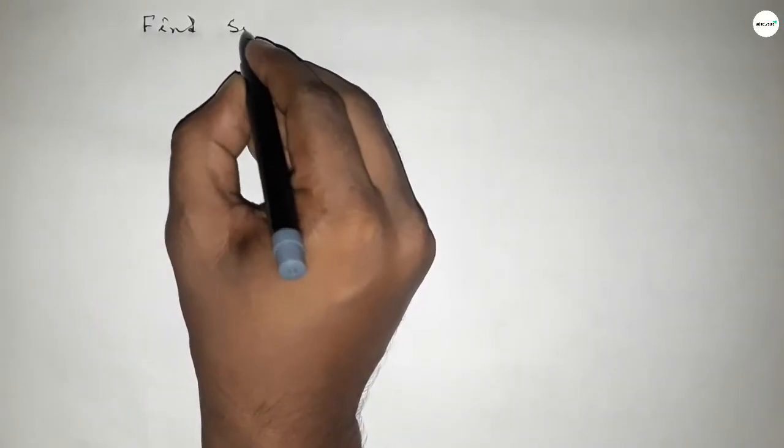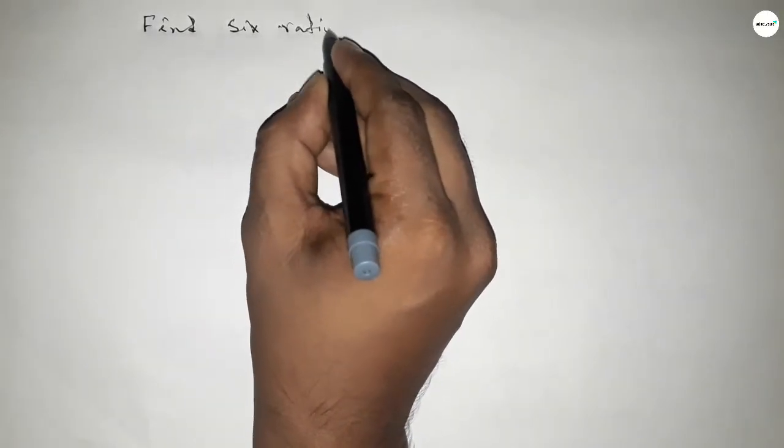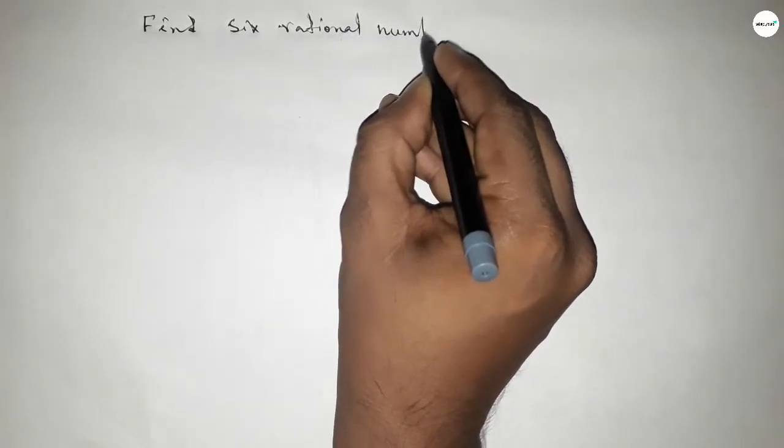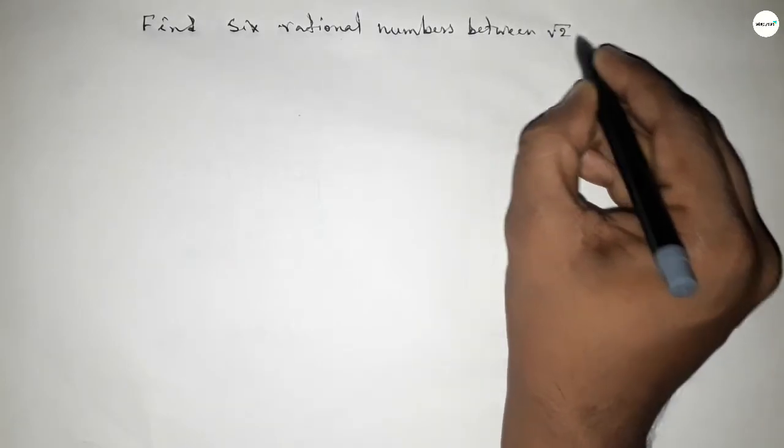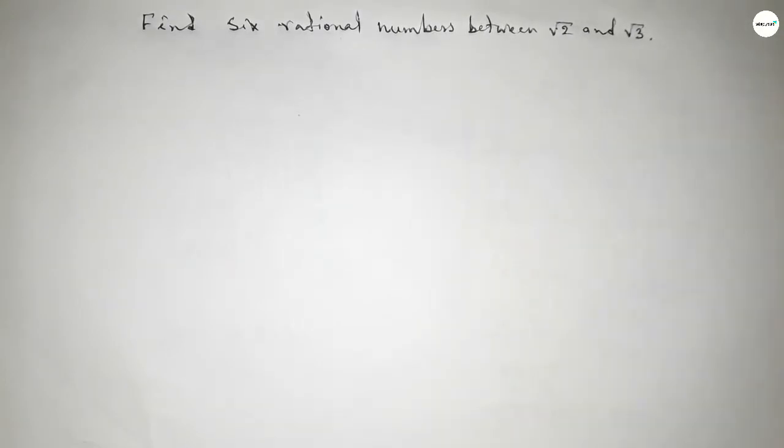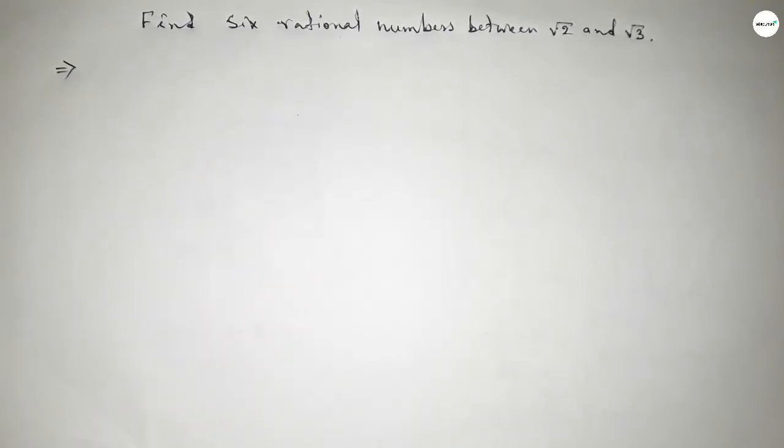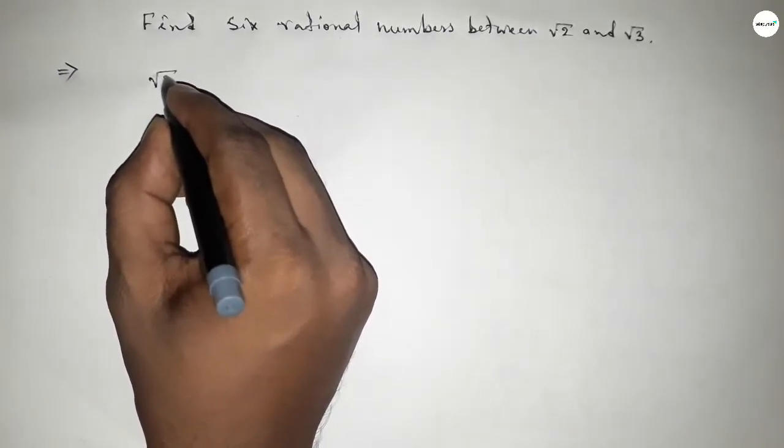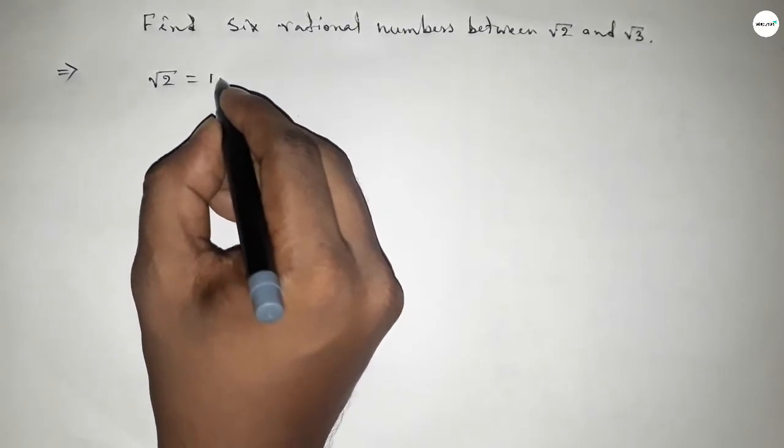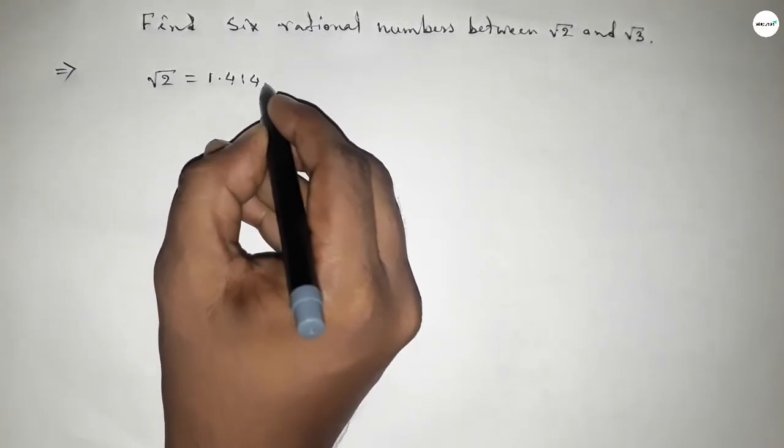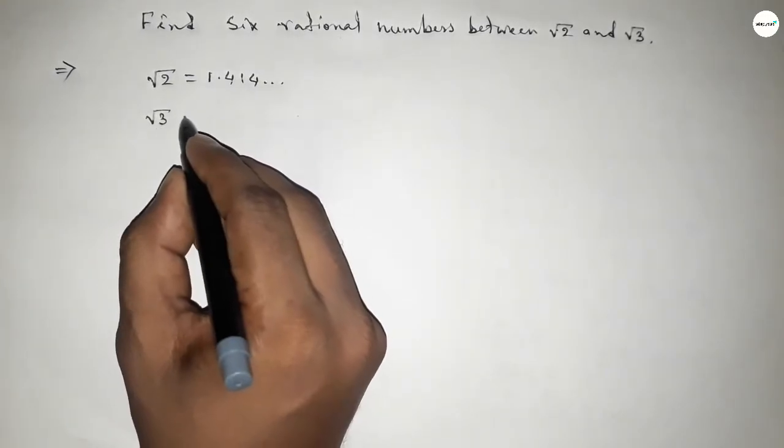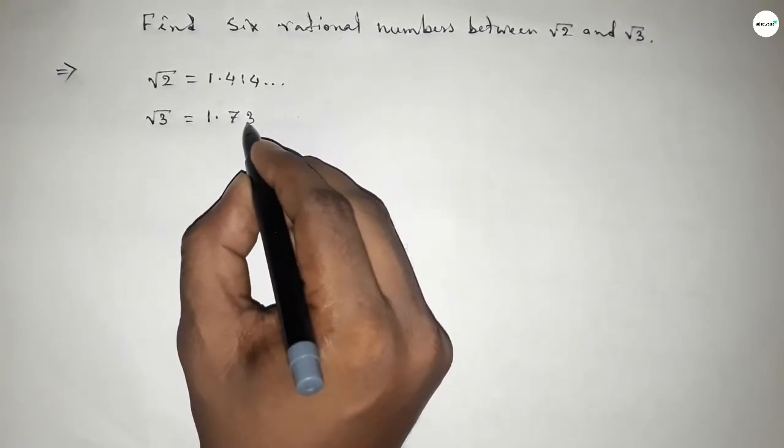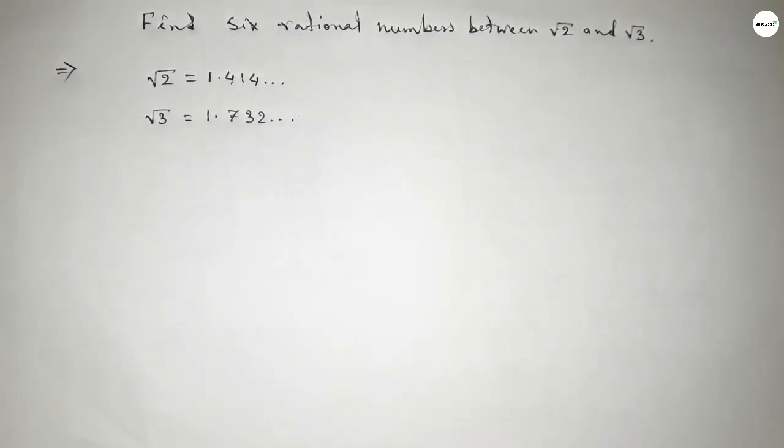Hi everyone, welcome to SHZ classes. Today in this video we have to find six rational numbers between root 2 and root 3. So let's start. First of all, write down the value of root 2. We know that root 2 equals 1.414 continuing, and root 3 equals 1.732 continuing.